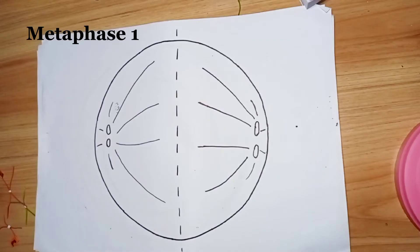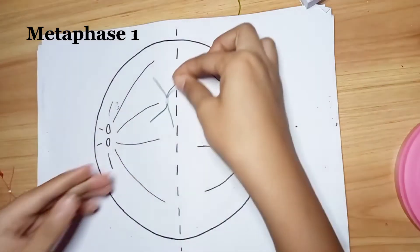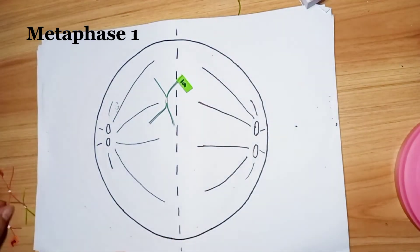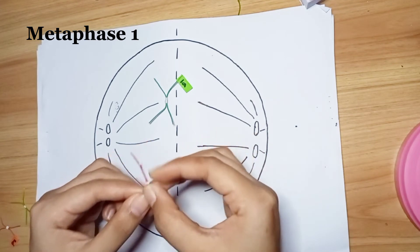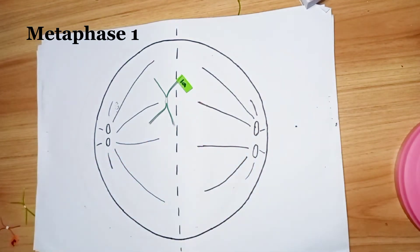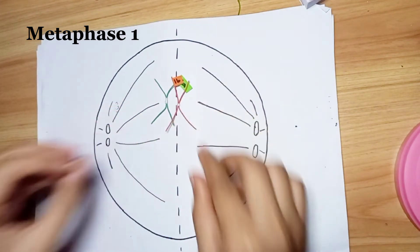During metaphase I, homolog pairs, not individual chromosomes, line up at the metaphase plate for separation. When the homologous pairs line up at the metaphase plate, the orientation of each pair is random.